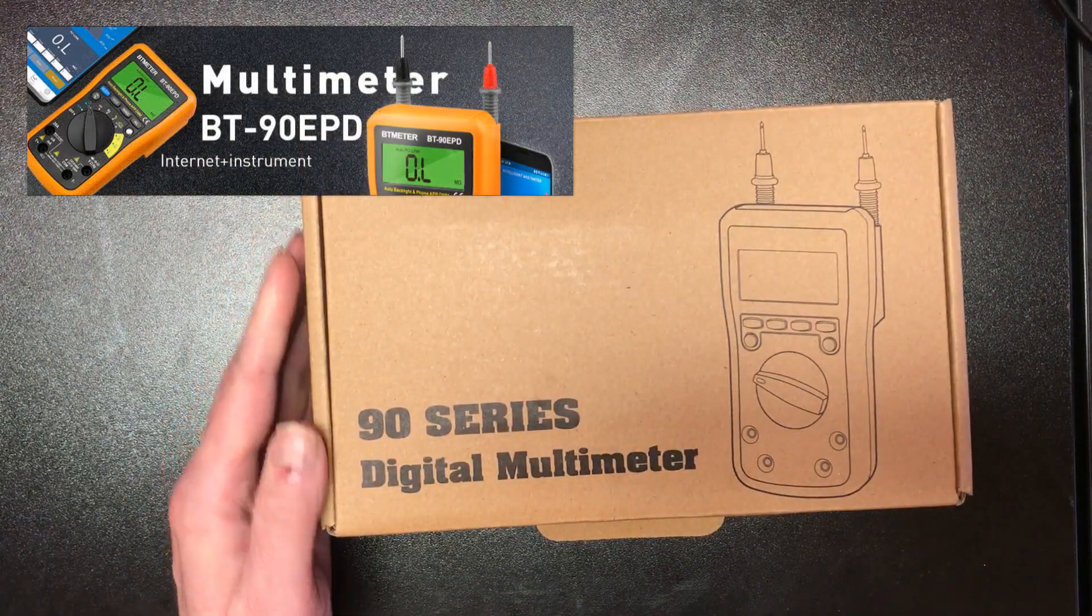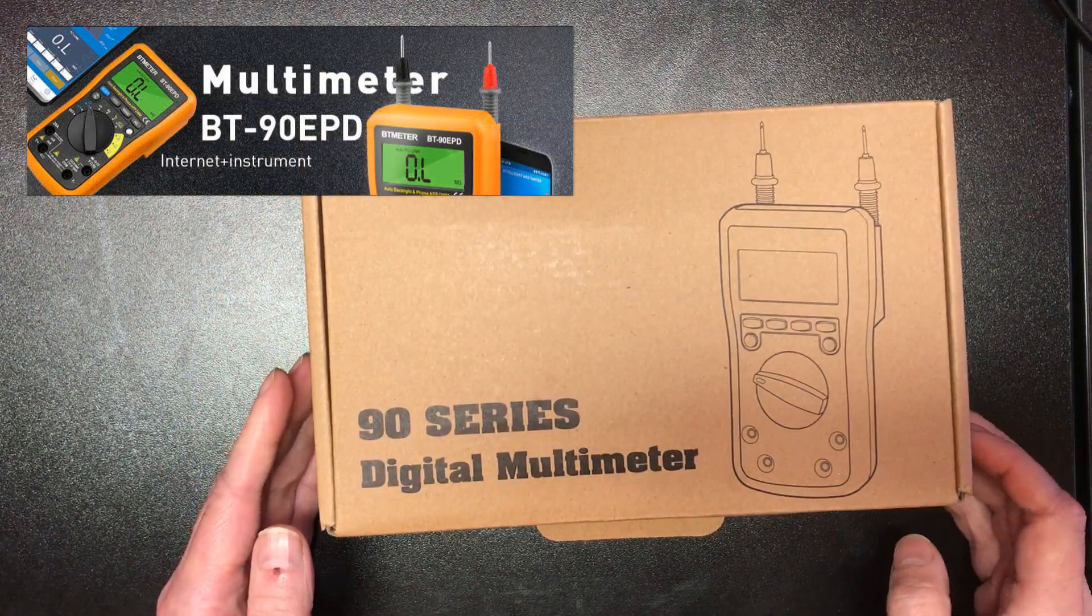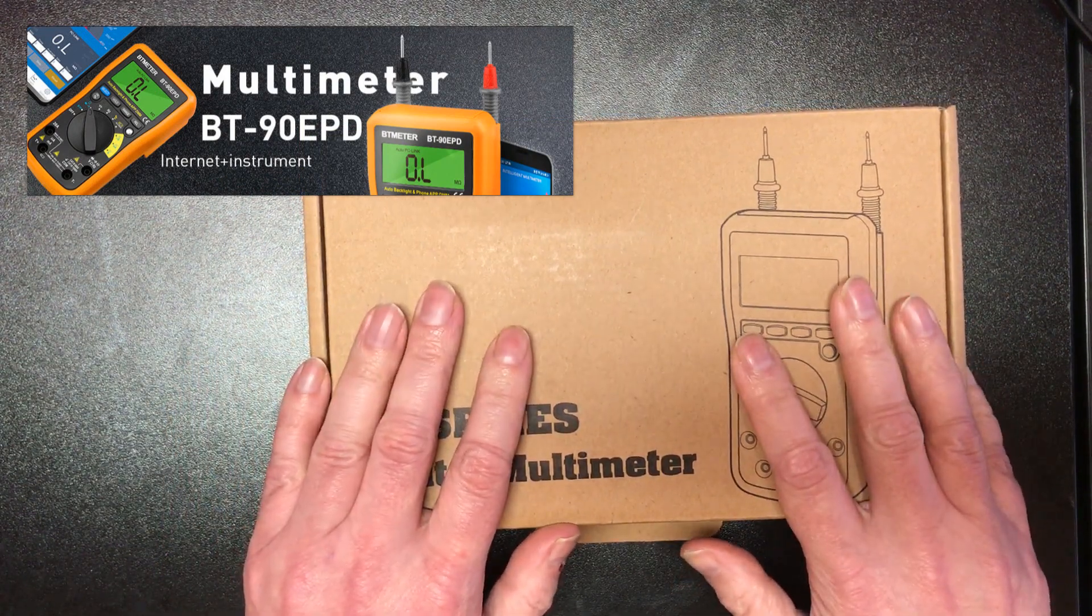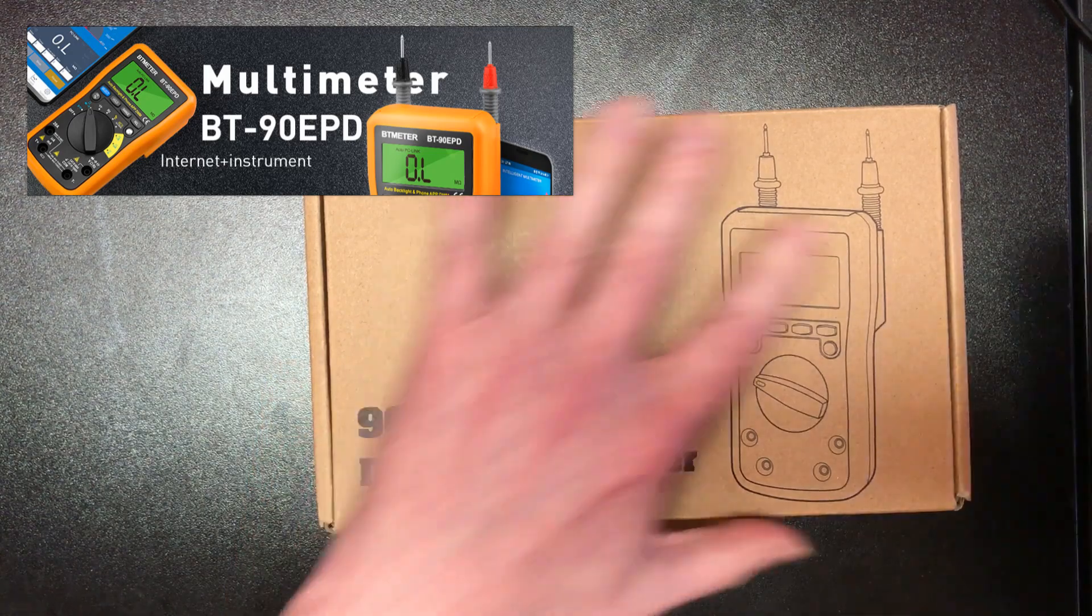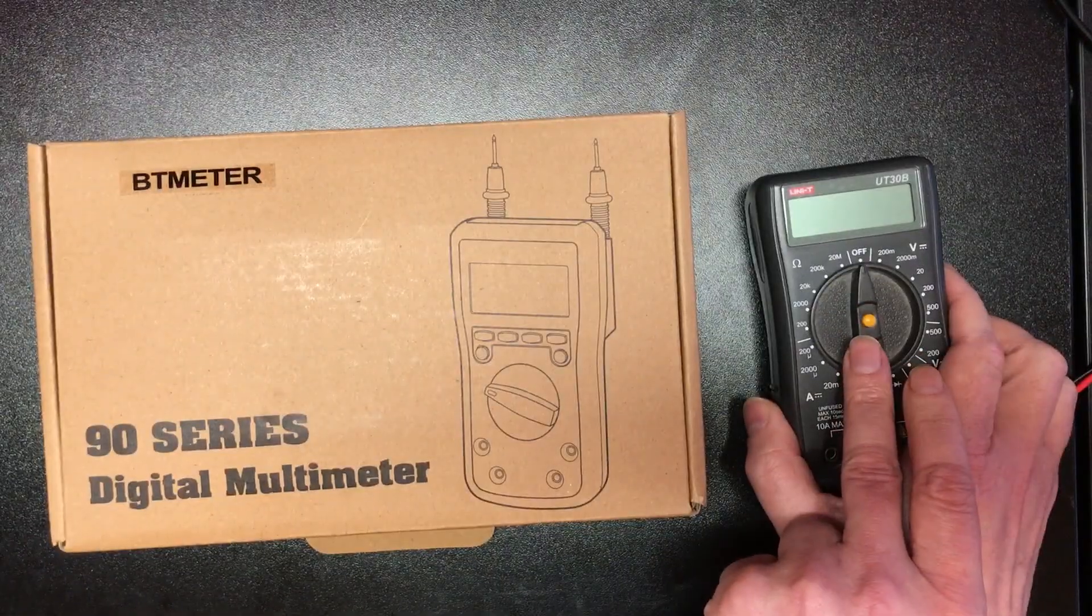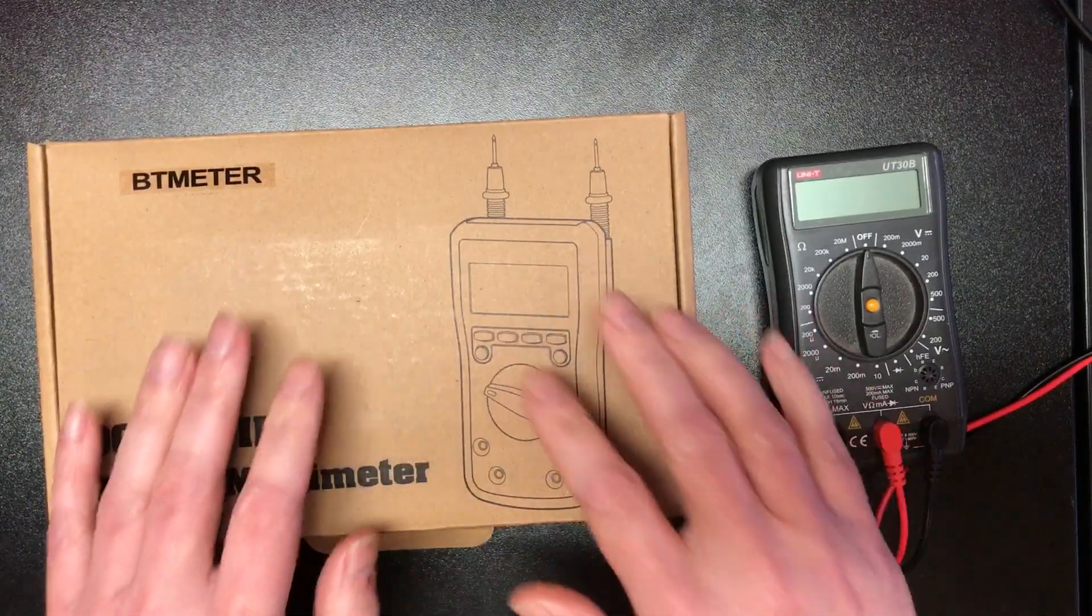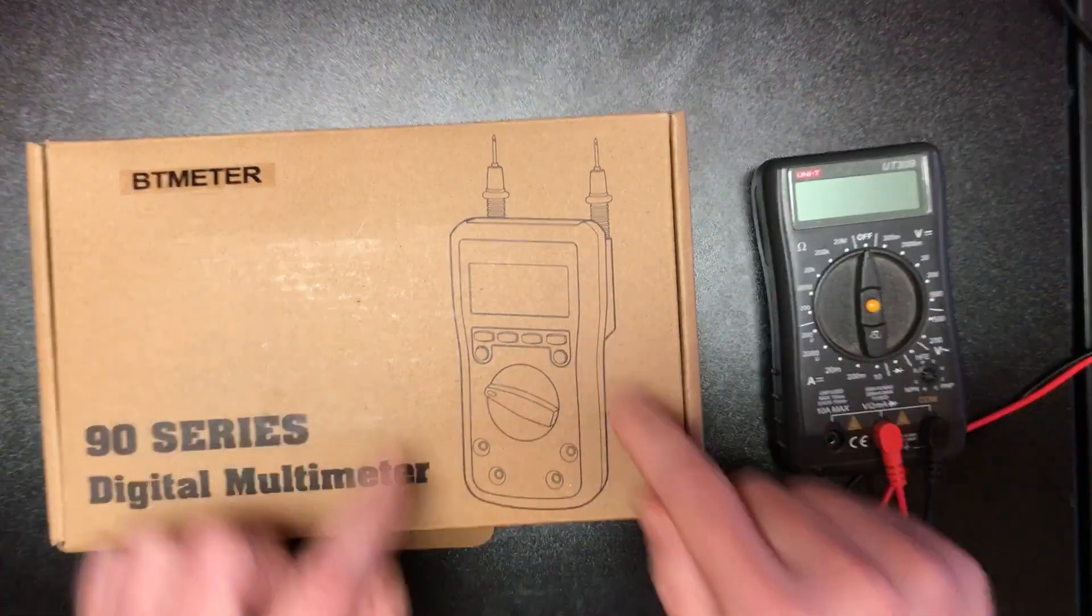I've bought myself a new multimeter and this is the BT90 EPD. This is quite a cheap multimeter, it was approximately £30. Actually a very similar price to this one which I've had for many years, but this has got a flaw for video recording that I'm hoping this is going to solve.